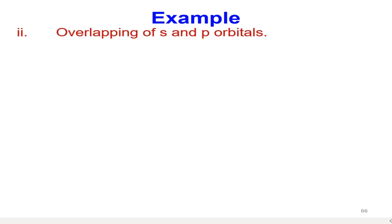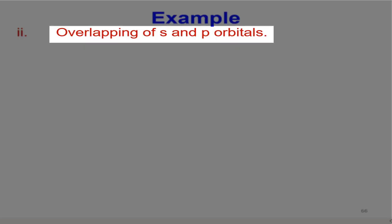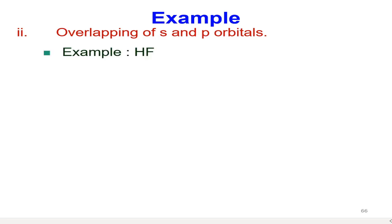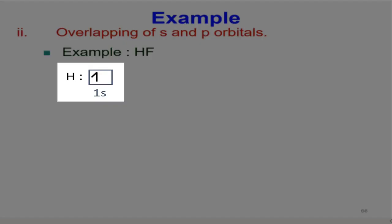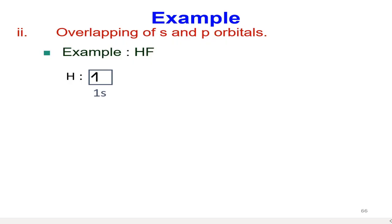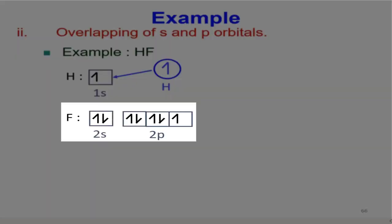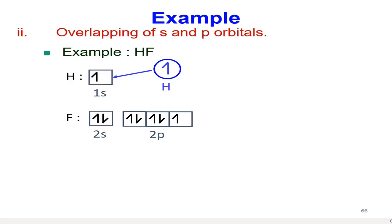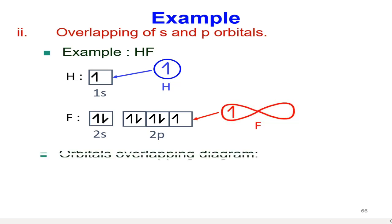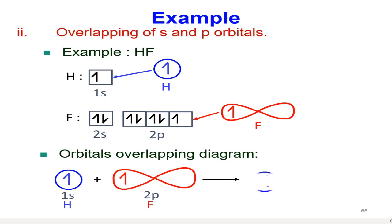The second way a sigma bond forms is overlapping of one s orbital and one p orbital. We take hydrogen fluoride (HF) as the example. Hydrogen has one valence electron in a 1s orbital, which is spherical. Fluorine has seven valence electrons and only one unpaired electron, located in a 2p orbital. To achieve an octet, hydrogen and fluorine share electrons, and the overlapping of the 1s orbital of hydrogen and the 2p orbital of fluorine forms a sigma bond.